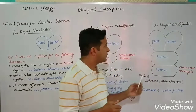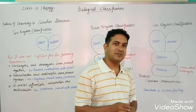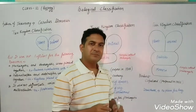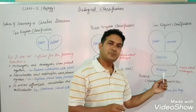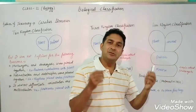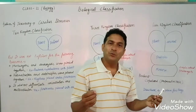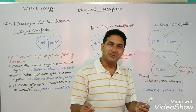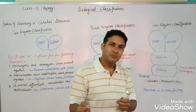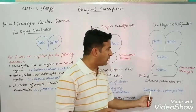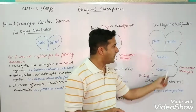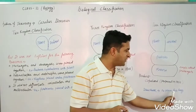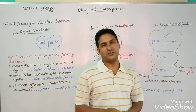However, there was one drawback of the four kingdom classification: there was no place for fungi. Fungi is another type of organism with its own distinct characteristics, and it was left out of this classification system.